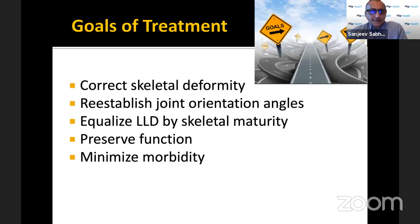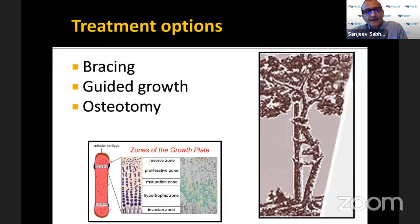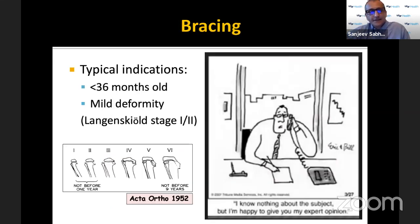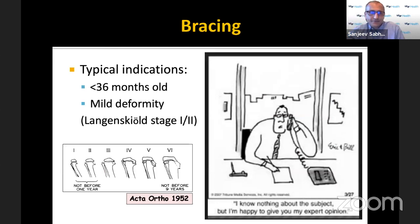The goals of treatment in Blount's disease — just like any other limb deformity — are to correct the bony deformity, establish joint orientation angles close to normal values, equalize limb length while preserving function and minimizing morbidity. Treatment options include bracing in the younger child, guided growth, and osteotomy. Bracing doesn't have a huge role in my practice, but based on the literature it's commonly used for children with established Blount's who are less than three years old with mild deformity — a Langenskiöld one or two.